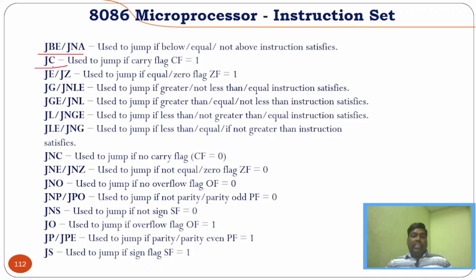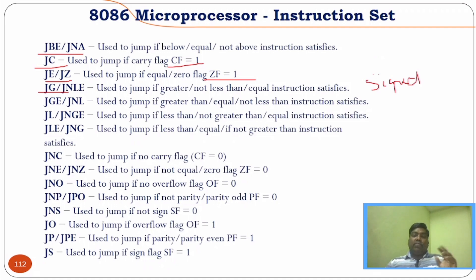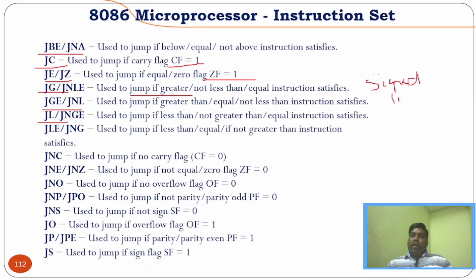JC jumps when the carry flag CF equals one. JE or JZ jumps if the zero flag ZF equals one. JG — Jump if Greater — is for signed operations (unlike the previous unsigned ones). It compares the first and second operands; if greater, it jumps. It can also be called Jump if Not Less Than. JGE — Jump if Greater or Equal — also for signed, jumps if the first operand is greater or equal. JL jumps if lower, and JLE jumps if lower or equal.